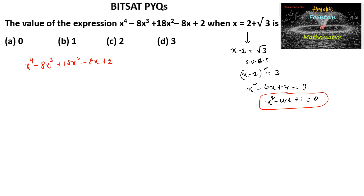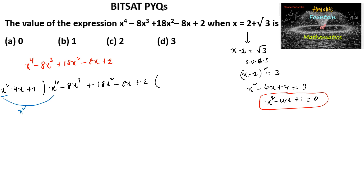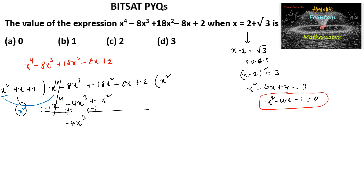Now let us divide this expression with x square minus 4x plus 1. So x power 4 minus 8x power 3 plus 18x square minus 8x plus 2 is divided by x square minus 4x plus 1. Here x square times x square gives x power 4, so we consider x square. Multiplying x square with x square minus 4x plus 1 gives x power 4 minus 4x power 3 plus x square. By subtraction we get minus 4x power 3 and 17x square minus 8x.